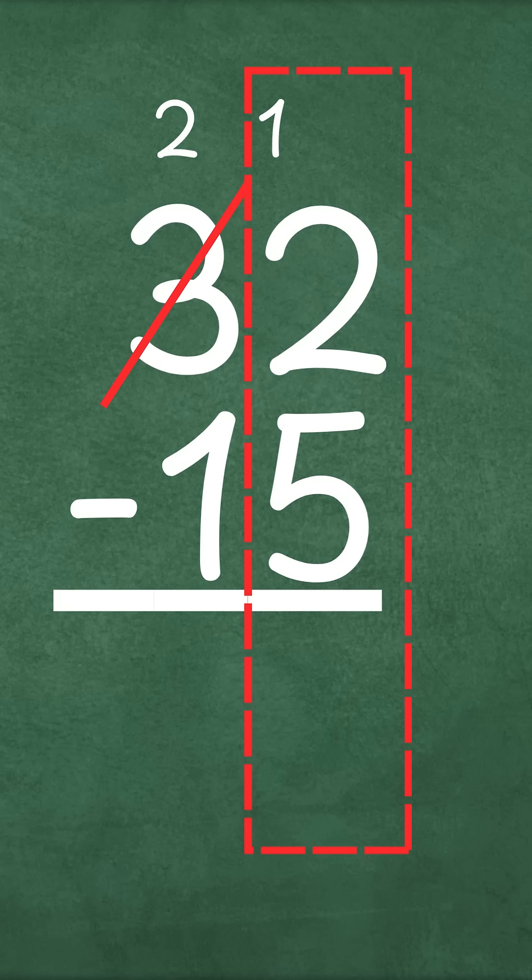Now we can subtract that big 5 from those 12 ones which we know equals 7. Next we can subtract the tens column. 2 minus 1 equals 1.